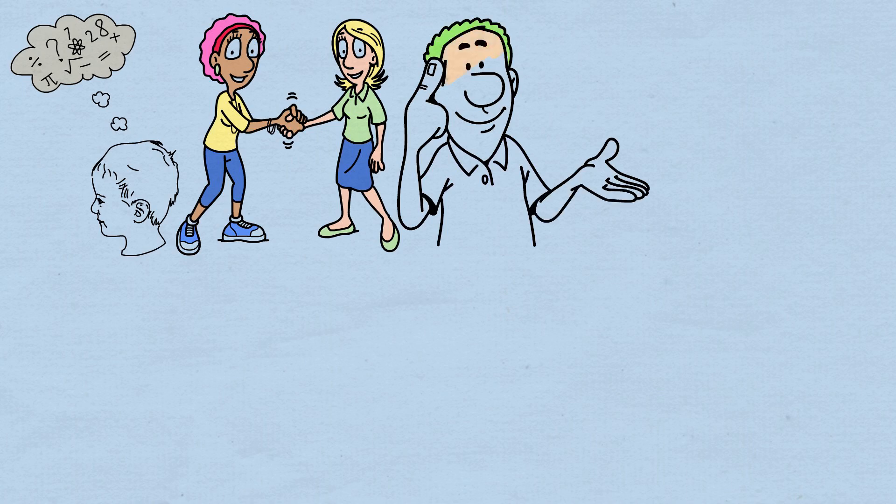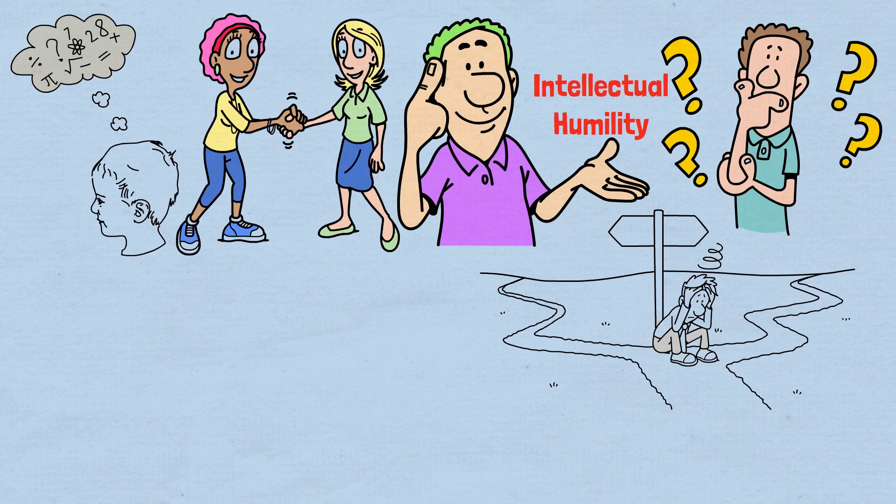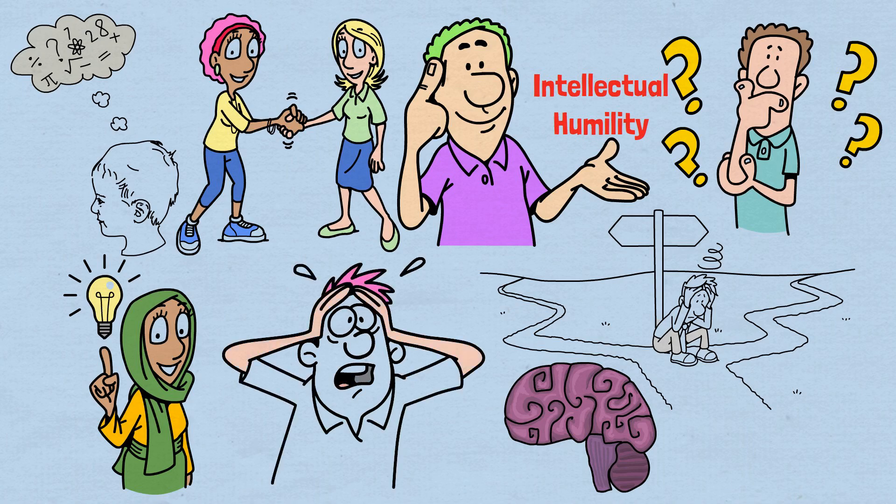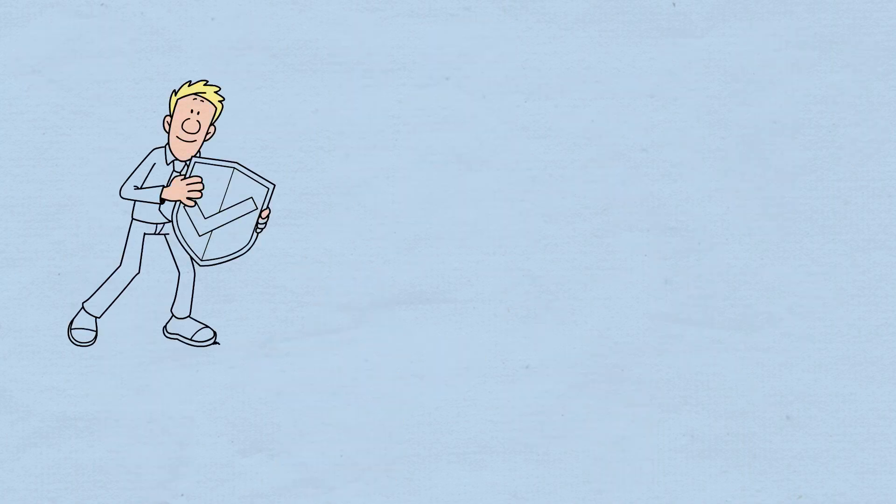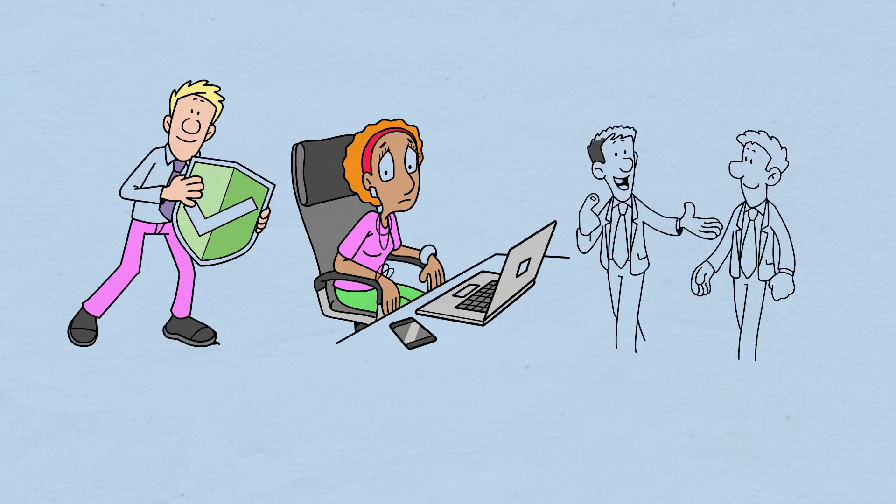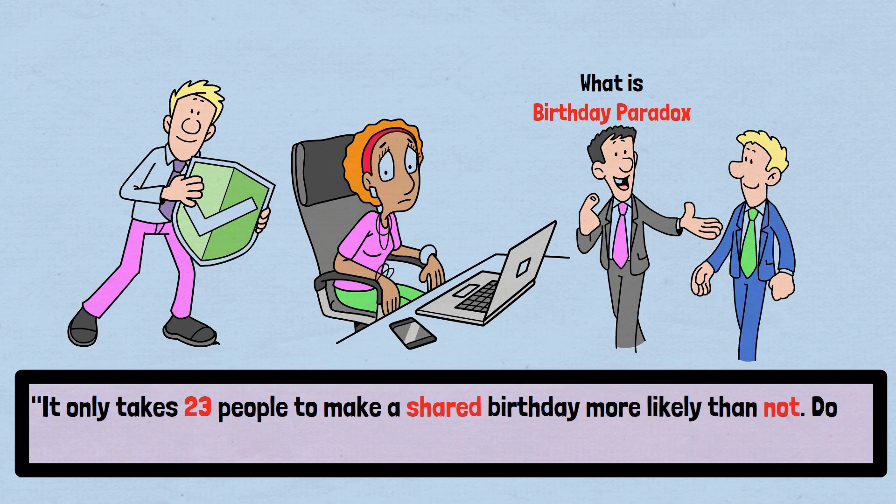What the birthday paradox ultimately teaches us is intellectual humility. Even with seemingly simple probability questions, our intuition can lead us badly astray. Our brains didn't evolve to handle these types of calculations naturally. The birthday paradox stands as a powerful reminder that mathematical truth sometimes lies far beyond our intuitive grasp. And that sometimes, we need to trust the calculations even when our gut tells us they can't possibly be right. So the next time someone asks about the birthday paradox, you can tell them with confidence. It only takes 23 people to make a shared birthday more likely than not. Don't believe me? Get 23 friends together and find out for yourself.